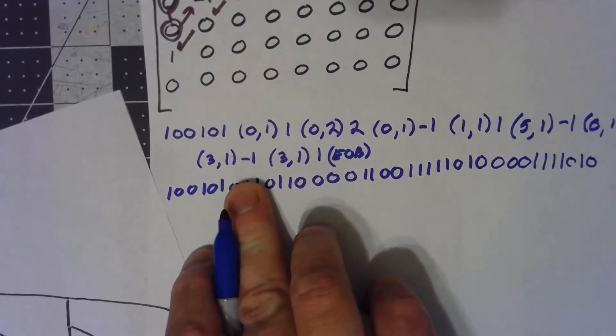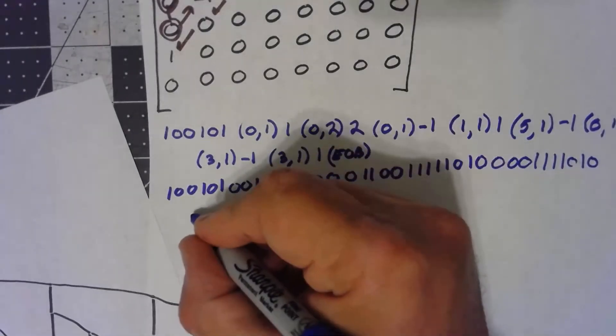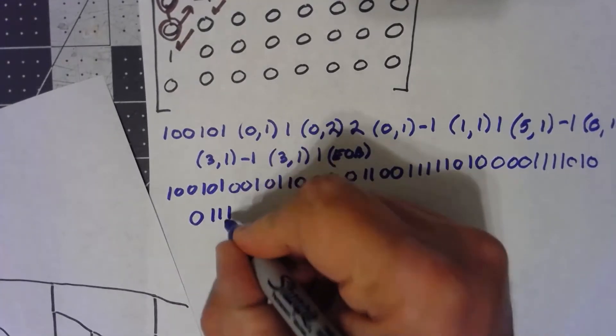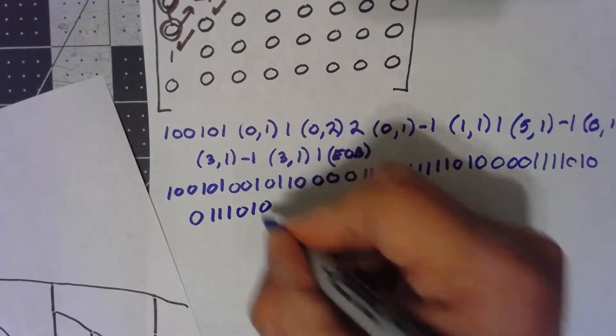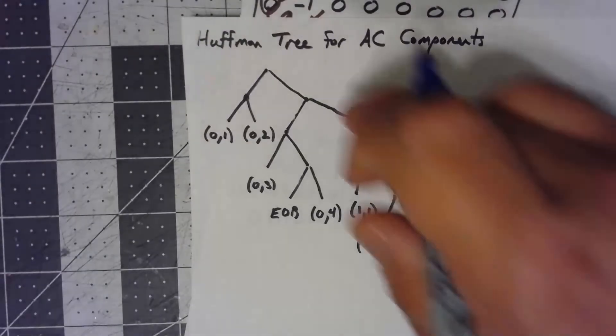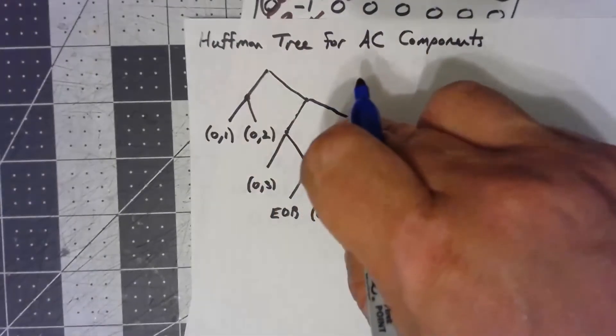Then encode a negative one is a zero. Another three, one, one, one, one, zero, one, zero. Positive one. And then the end of block is a one, zero, one, zero.